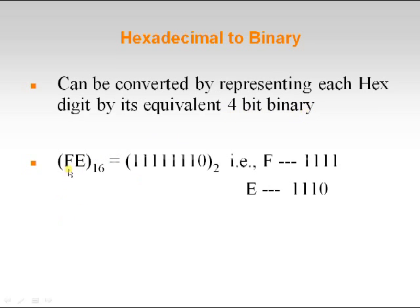Let us see with an example: FE is the hexadecimal number. We have to represent F by using 4-bit binary, that is four 1s, and E is nothing but 1110 — that is three ones and a zero. So this is how we convert a given hexadecimal number into binary.